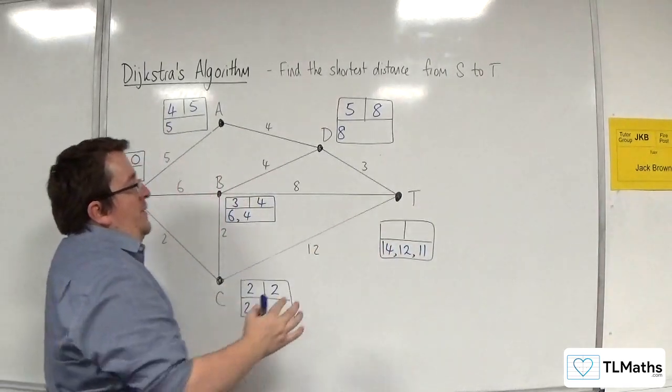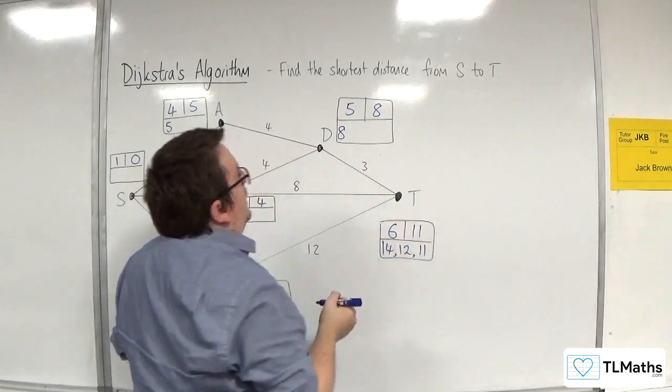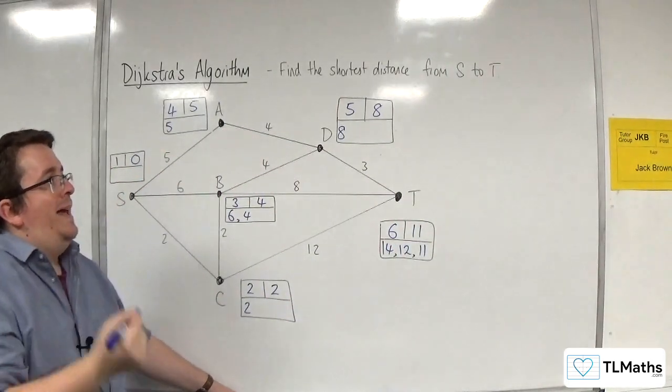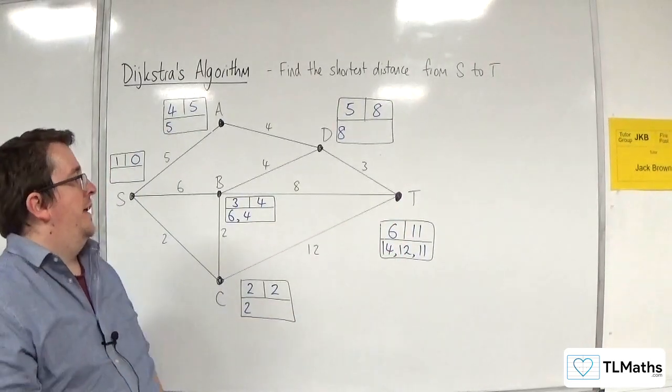Now, T is the only one I haven't visited, so it gets labeled with six. Final value, 11. So the shortest distance from S to T is 11. That is the answer to that question.